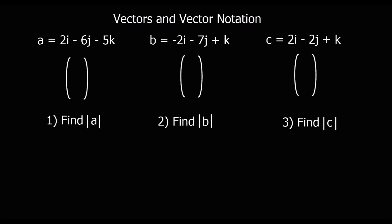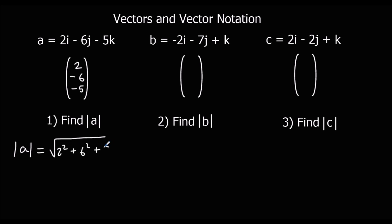3 more questions — write them in column vector form and then find the modulus of the vector. So we've got a: (2, minus 6, minus 5). The modulus of a is the square root of 2 squared plus 6 squared plus 5 squared. So we've got 36 plus 4 is 40, plus 25 is 65, so root 65.